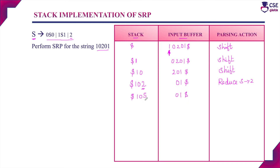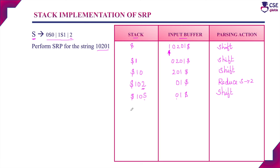Now the input buffer contains the elements 0, 1. The top element of the stack is S, so we check for a handle — S, or 0 S, or 1 0 S. There is no matching substring in the given productions. So in the next step we shift one more element into the stack; the next element 0 will be pushed into the stack.